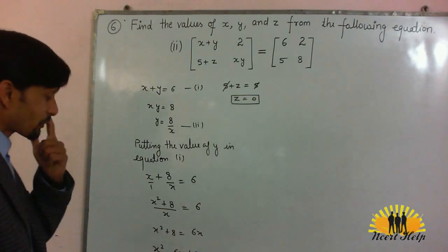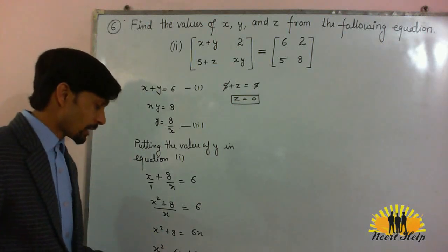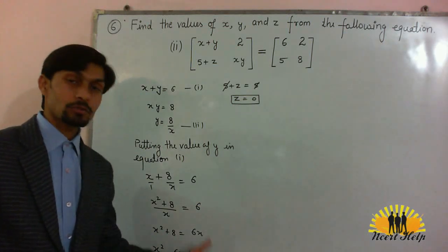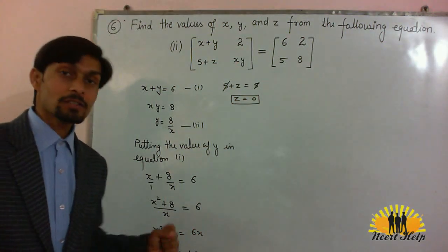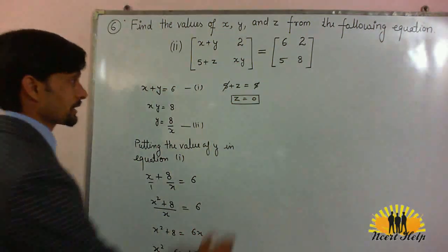Now here we get a quadratic equation: x square minus 6x plus 8 is equal to 0. Now we have to find out the factors of this quadratic equation.